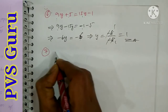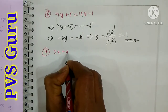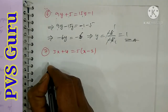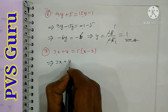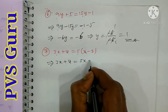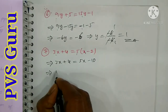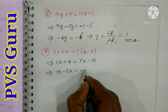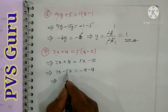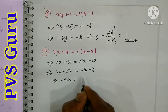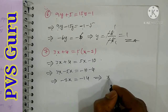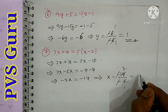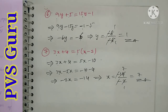Question number 7: 3x plus 4 is equal to 5 into (x minus 2). Expanding: 5x minus 10. Take 5x to the left side and 4 to the right side. 3x minus 5x is minus 2x, equal to minus 10 minus 4 equals minus 14. So x equals minus 14 by minus 2, which is 7.